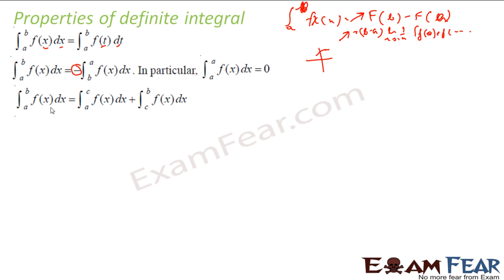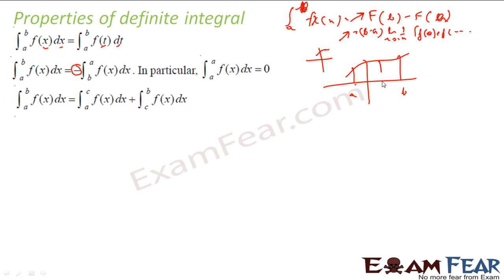Also, the integral of f dx from a to b equals the integral of f dx from a to c plus the integral from c to b, where c is somewhere between a and b. Logically, if you see this graph, you have the integration from a to b, which equals the integration from a to c added to the integration from c to b — you add both pieces and you get the full integral.